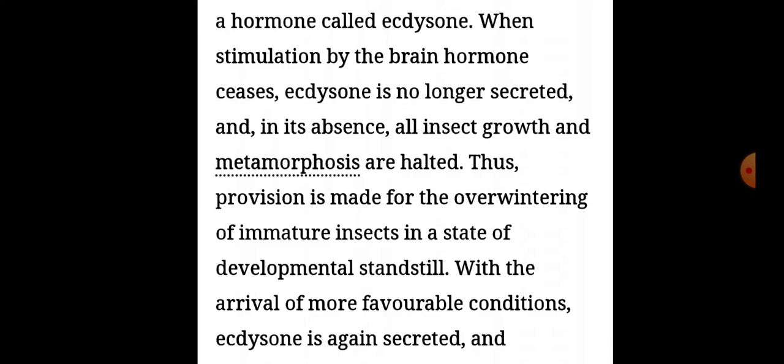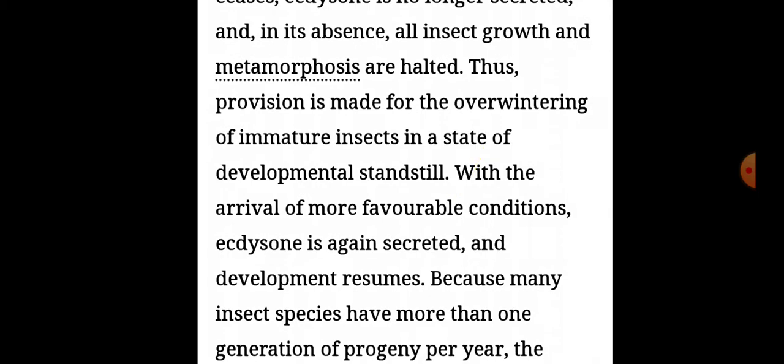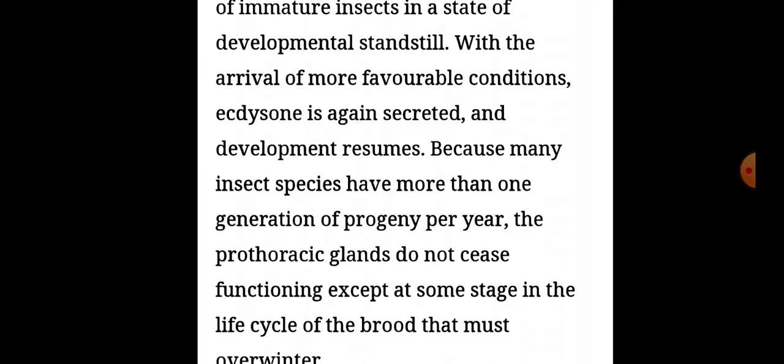When stimulation by the brain hormone ceases, ecdysone is no longer secreted, and in its absence all insect growth and metamorphosis are halted. Thus, provision is made for the overwintering of immature insects in a state of developmental standstill. With the arrival of more favorable conditions, ecdysone is again secreted and development resumes. Because many insect species have more than one generation per year, the prothoracic glands do not cease functioning except at the stage in the life cycle of the brood that must overwinter.